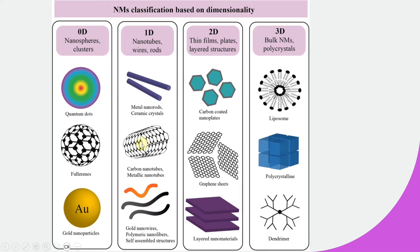Carbon nanotubes have a length of more than 50 centimeters, whereas their diameter is only in the nanometer range. So carbon nanotubes are 1D nanostructures because they have one dimension out of the nanometer range, while the other dimensions remain in the nanometer range.